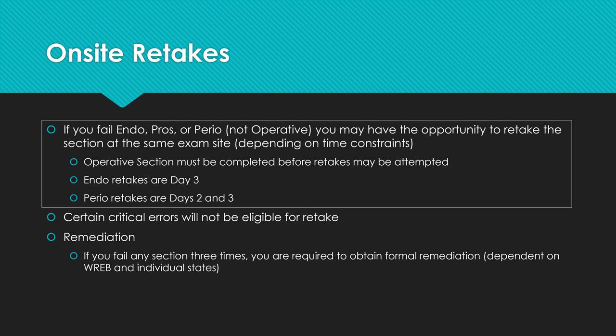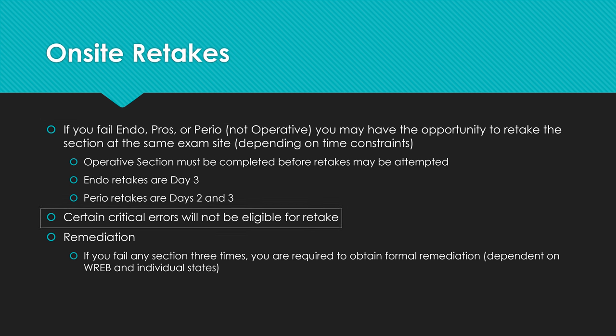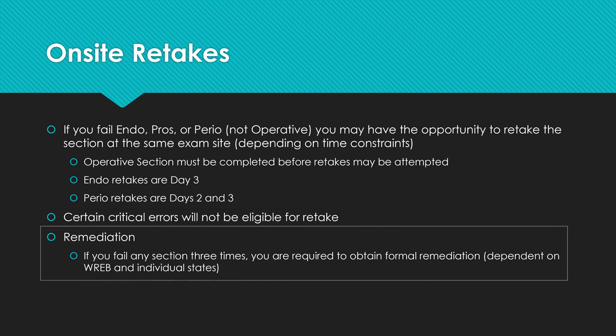For retakes: if you fail endo, pros, or perio, you can retake the same section at the same site that weekend. The operative section must be taken first. Endo retakes are only on day three — Monday. Perio retakes are only on days two and three. Certain critical errors will not allow you to retake exams. If you fail any section three times, there is a remediation process before you're allowed to retake REBS.